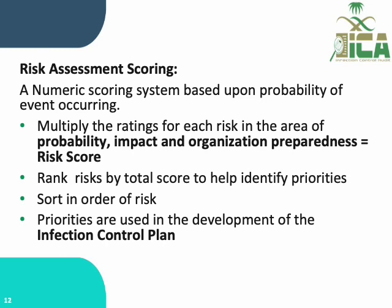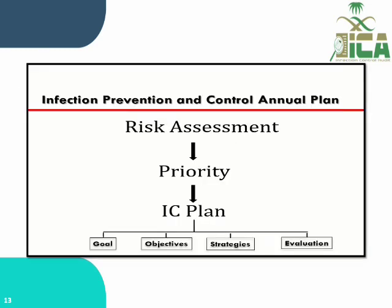Risk assessment scoring is a numeric scoring system based upon probability of event occurring. Multiplying the rating for each risk in the areas of probability, impact, and organizational preparedness will produce the score. Rank risk by total score to help identify priorities, then sort in order — risk priorities are used in the development of the infection control plan, starting from the risk assessment itself, then choosing priorities and developing the action plan.